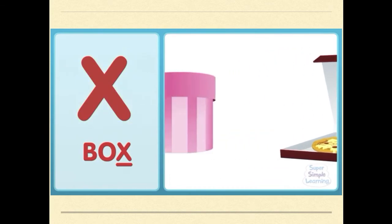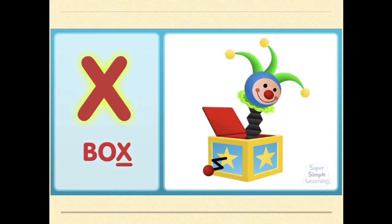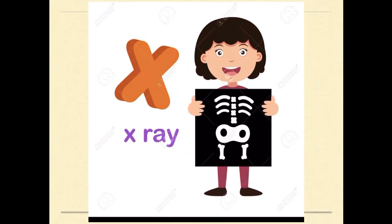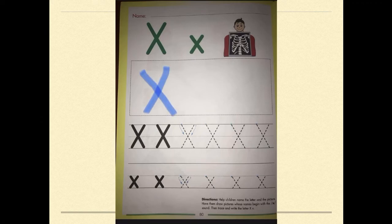X, X, X. X is for X-ray. Now, KG1, open your book on page 80 and trace the capital X and the lowercase x, and you can also write the letter X capital and small inside the box.